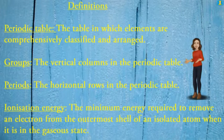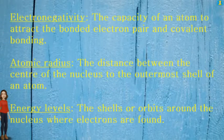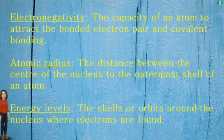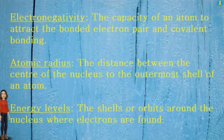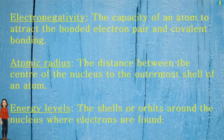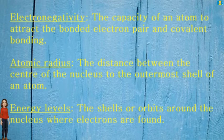Electron affinity — the capacity of an atom to attract the bonded electron pair in covalent bonding. Atomic radius — the distance between the center of the nucleus to the outermost shell of an atom. Energy levels — the shells or orbits around the nucleus where electrons are found.